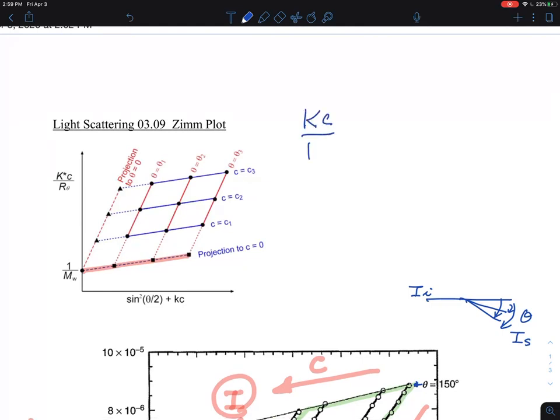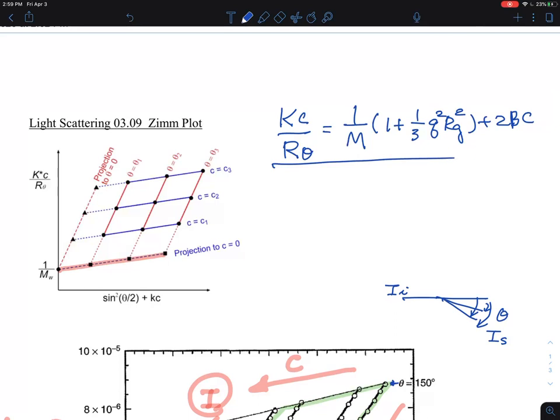Kc over R theta. So scatter light intensity related term. One over scatter light intensity. That's probably fair for me to say. And then 1 over molecular weight times (1 + 1/3 Q squared Rg squared + 2BC). So this is an equation, what is called the Zimm equation.